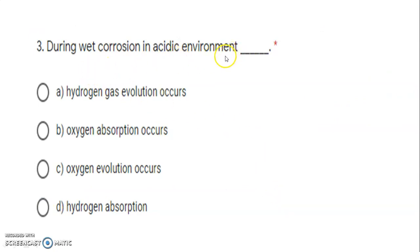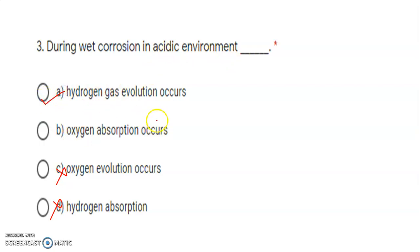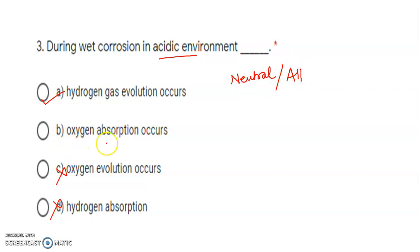Next: during wet corrosion in acidic environment, which mechanism occurs? Options include hydrogen gas evolution, oxygen absorption, oxygen evolution, and hydrogen absorption. Oxygen is not evolved — oxygen is absorbed, so that option is wrong. Hydrogen is also not absorbed, so that is wrong too. When the environment is acidic, hydrogen gas evolution mechanism occurs. If the conducting medium is neutral or alkaline, then oxygen absorption mechanism occurs.